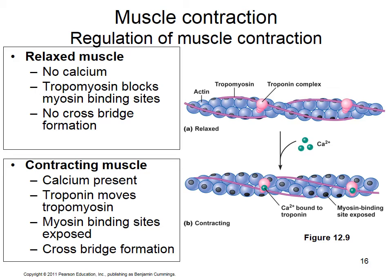When a muscle contracts, the sarcoplasmic reticulum releases calcium due to action potentials traveling down the T-tubules. The motor neuron causes action potentials to fire on the muscle fiber, causing calcium release. That calcium binds to troponin, which changes shape and moves tropomyosin off the binding sites on actin, allowing cross-bridge cycling. As long as calcium remains in the sarcoplasm, contraction continues.